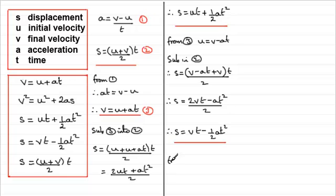So if we take 3, let's go from 3. From 3, make t the subject. We could take u from both sides. v minus u equals at. And then divide by the a. So you end up with t equaling v minus u all divided by a. And then we'll sub this into 2.